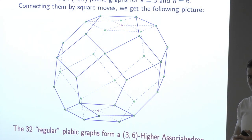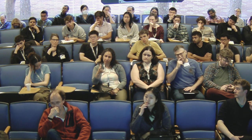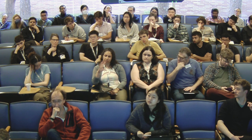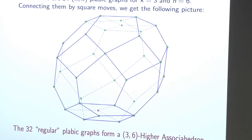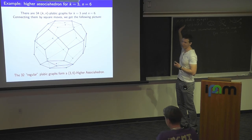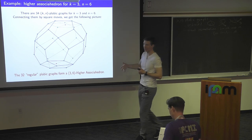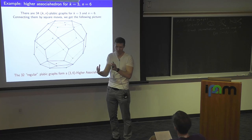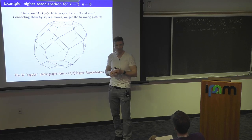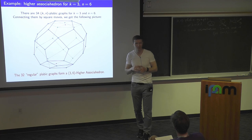Question: about positroids — for every plebik graph you have a positroid, are you looking at a polytope of positroids as vertices? This story is only for one favorite positroid — all K-N plebik graphs have the same positroid. What's the extension for other positroids? I thought about it — you get a subset of the zonotope, but it's not a very nice subset, so that story is not fully developed.